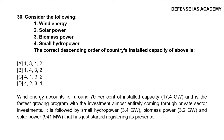Question 30: Consider the following in descending order of India's installed renewable capacity: 1. Wind energy, 2. Solar power, 3. Biomass power, 4. Small hydropower. The correct answer is option B: 1, 4, 3, 2 — that is wind energy, small hydropower, biomass power, then solar power. Wind energy accounts for around 70% of installed capacity and is the fastest growing program, with investment almost entirely from the private sector, followed by small hydropower, biomass power, and then solar power.